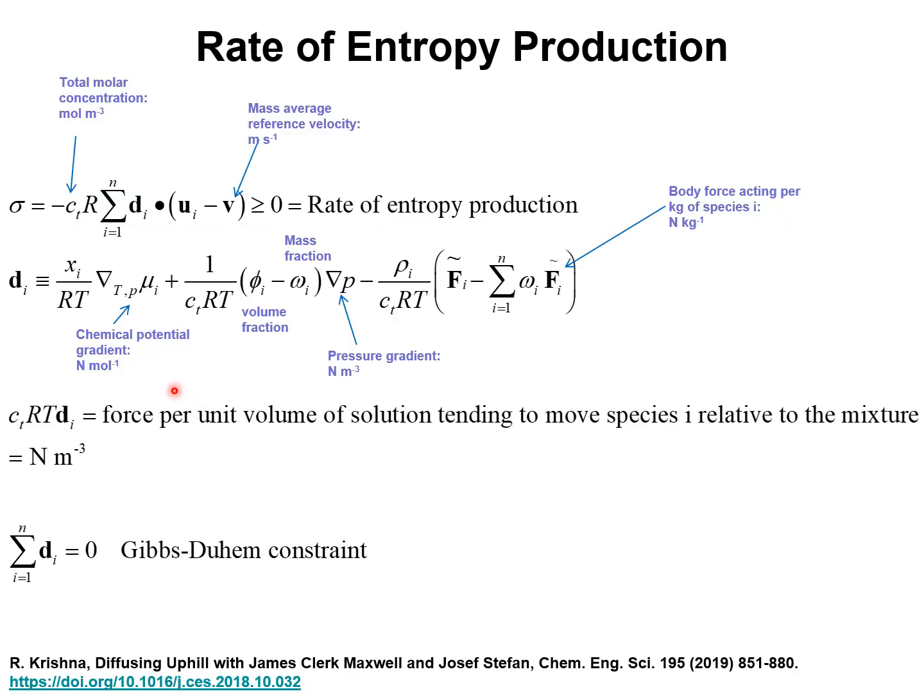For diffusion in N component mixtures, the rate of entropy production can be expressed as the sum of the products of two factors. One, a driving force, and the other, the differences in the velocities of transport of component i with respect to a reference velocity. In this case, the mass average reference velocity for the mixture V. The second law of thermodynamics asserts that the rate of entropy production must be positive definite.